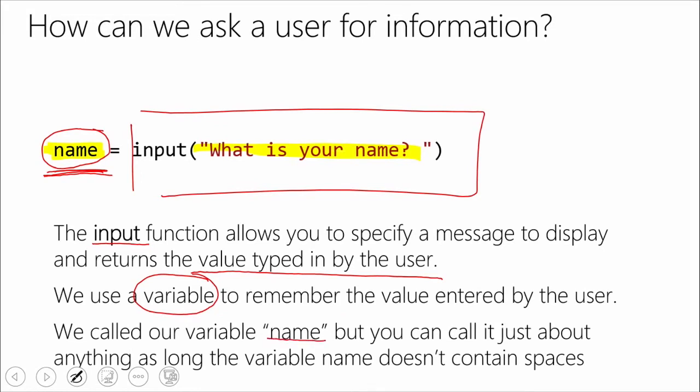You're going to notice that we can call it whatever we want. So if you wanted to go in and maybe just call that 'Wibble' instead of name, you can do that. It'll work. It won't make any sense, but it will work. So right here, we're already teaching you a bit of good programming style: use names that make sense. If you look at a name of something and you're going, 'I don't know what that's supposed to do,' take another look at the name you've got, because you've probably got a bad name there.